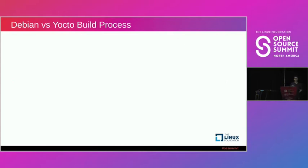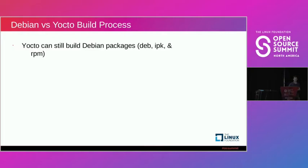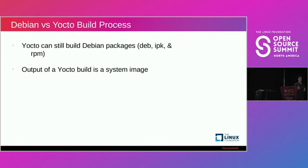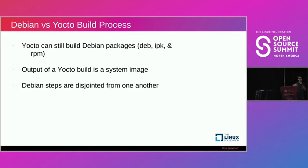When comparing our Debian and Yocto build processes, what's important to understand is that Yocto piggybacks off of a lot of technologies that already exist — your Debian build process is actually part of Yocto. It defaults to building IPK packages but can be configured to build Debian packages as well. The key difference is that Yocto's output is a full system image with your applications baked into it, whereas with Debian you flash the OS and then use an agent to pull down your application layer separately.